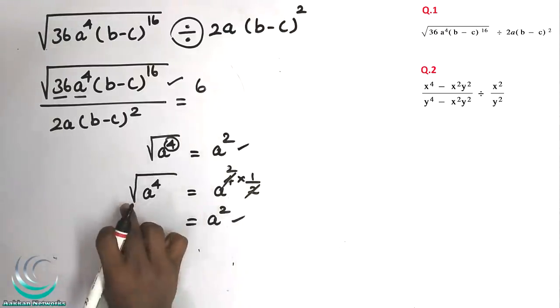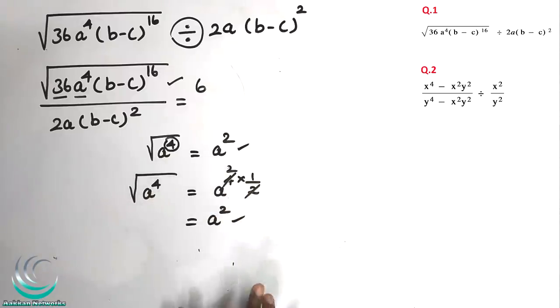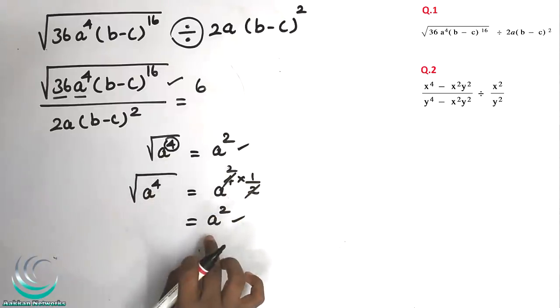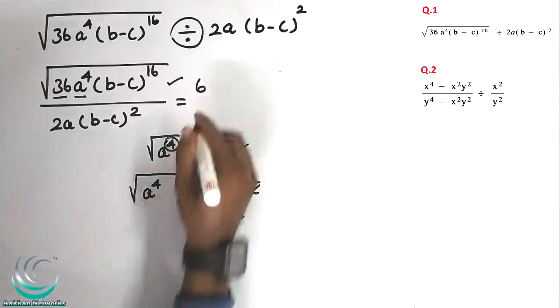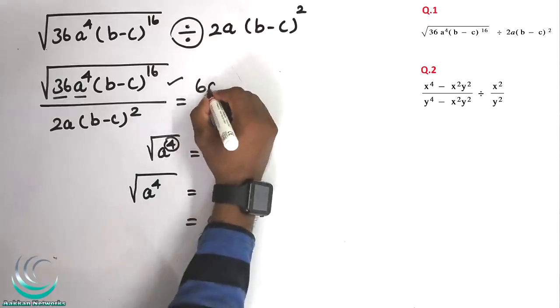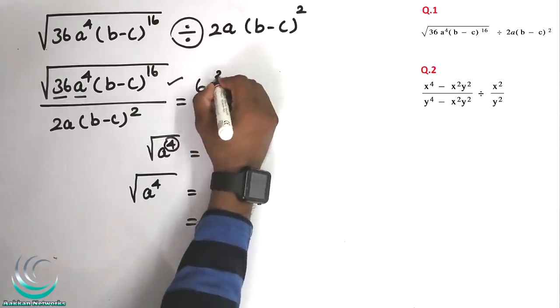So the square root of a power 2 — the answer is a power 2. The square root of a⁴ gives us a².